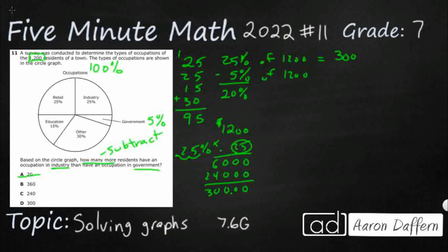Now I need to do the same thing with 1,200 times 5%. Moving the decimal over twice, 5% becomes 0.05. So 1,200 times 0.05 gives me 60.